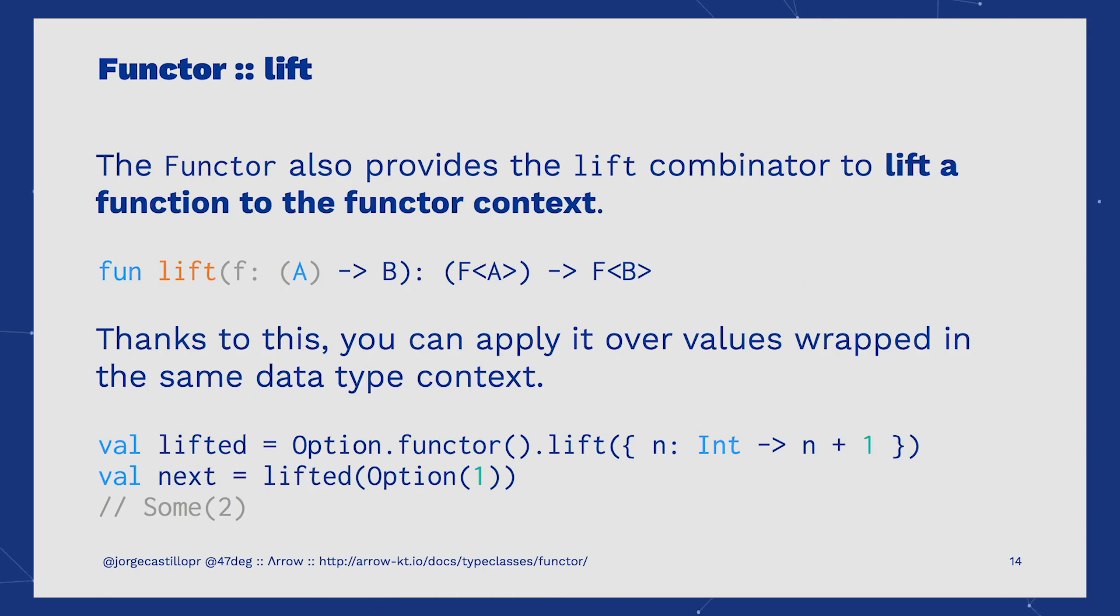Another behavior provided by Functor is the Lift Combinator. Lift is able to lift a function to the Functor context. So you pass a function from A to B, and Lift will return a function from F of A to F of B. You can store that lifted function into a variable and use it later on. Once you have a function lifted to the given context, you can apply it over any values wrapped over the same context, like we are doing here. We have chosen option here as the F context.